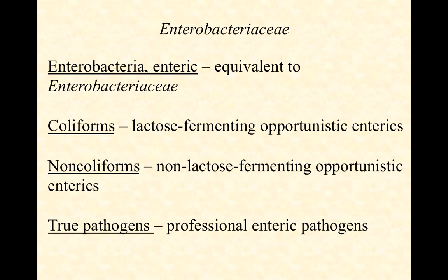Then we have a set we call true pathogens — these are professionals. You don't have Salmonella, for example, living in your gut mutualistically or commensally. If they're there living in your gut, they're either trying to cause an infection or they're succeeding. So these are the three groups: coliforms, non-coliforms, and true pathogens. In this video we'll look at the coliforms and non-coliforms, and a separate video will cover the true pathogens.